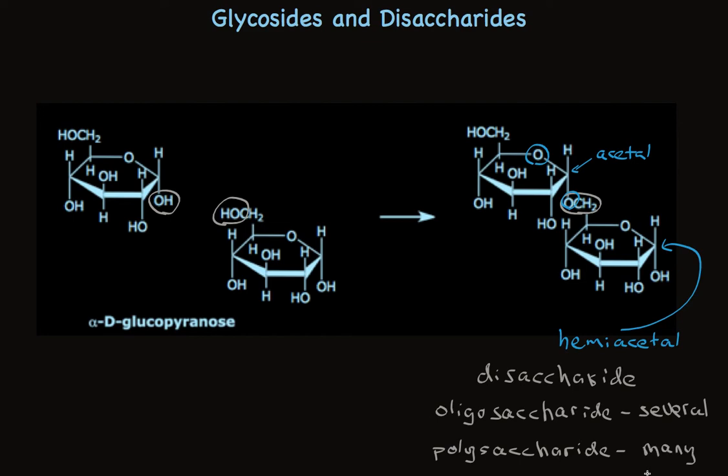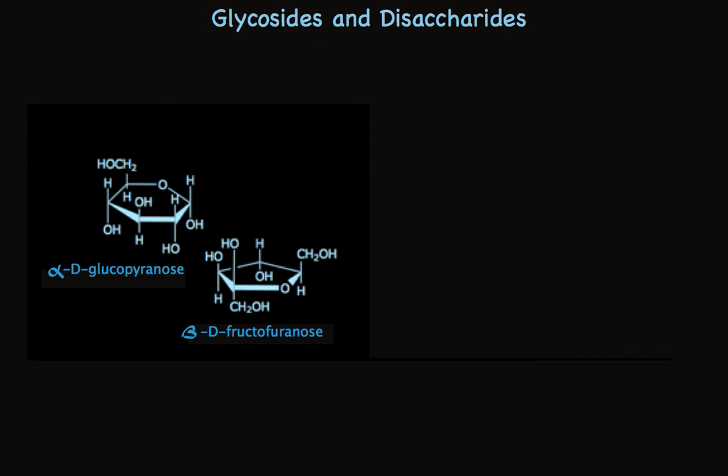I want to show you another disaccharide. In this example, I'm talking about joining a molecule of alpha-D-glucopyranose with a molecule of beta-D-fructofuranose. So we have the fructose in the five-membered ring form, the glucose in the six-membered ring form. They have specific stereochemistry, which I've shown here. To make this disaccharide, this hydroxyl group at the anomeric center of the glucose will be replaced by this hydroxyl group of the fructose.